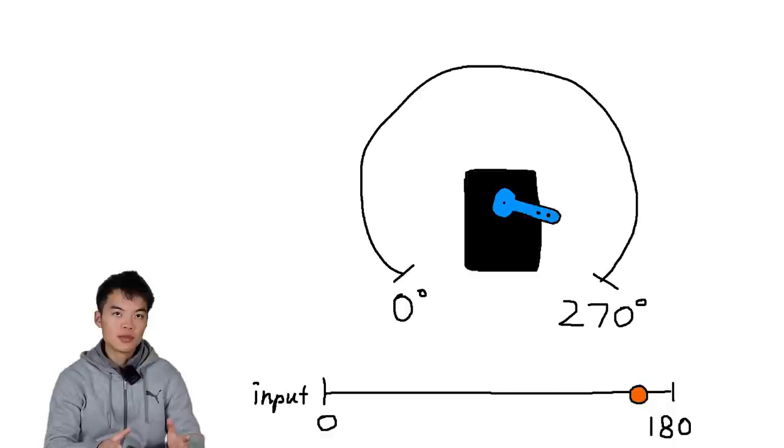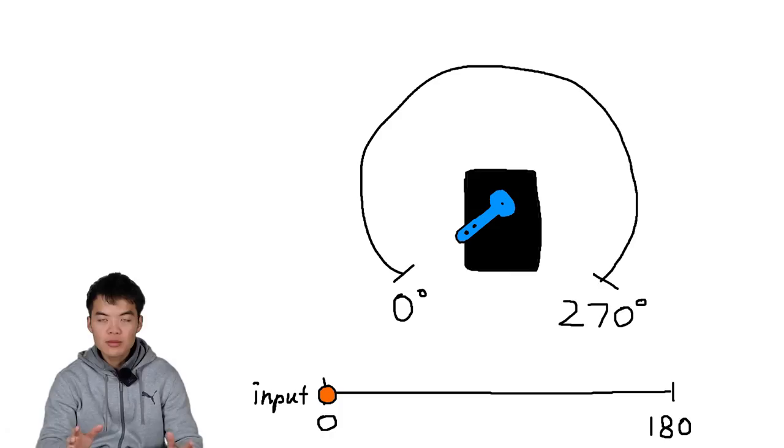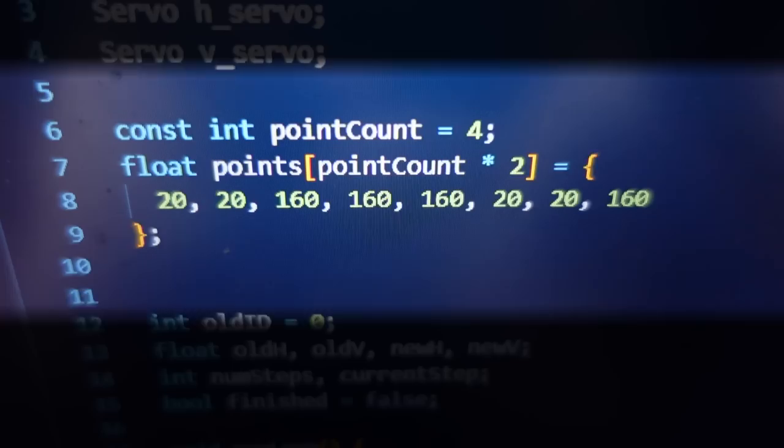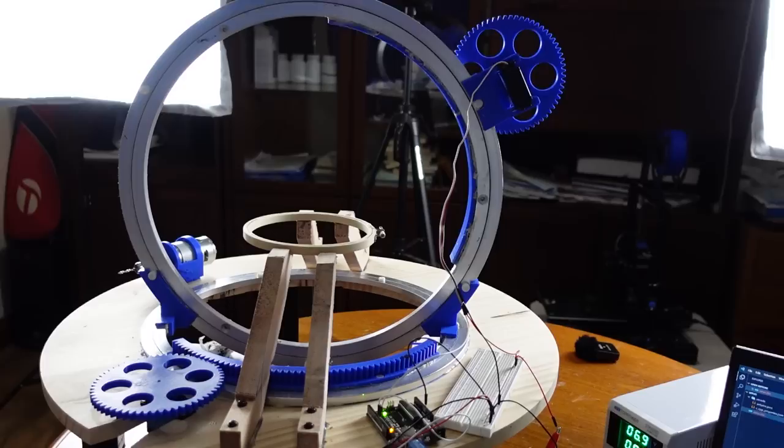But for real though, the way this will work is the servos each take a value between 0 and 180, even though they're 270 degrees. It's kind of weird, but anyways. I wrote some code to tell the servos to gradually move to a series of coordinates and then uploaded it to the Arduino.